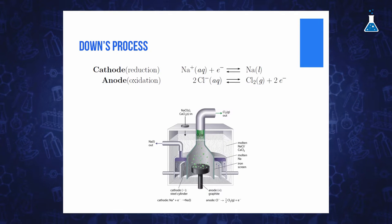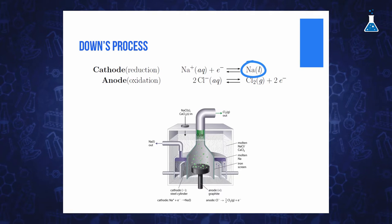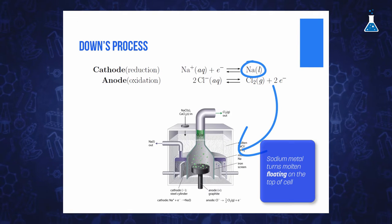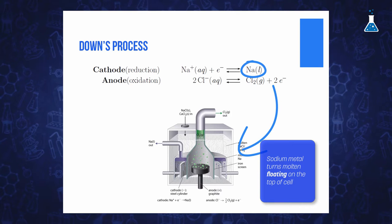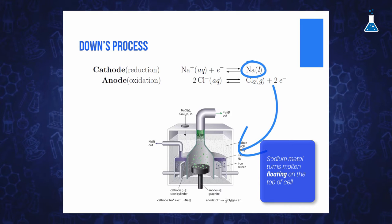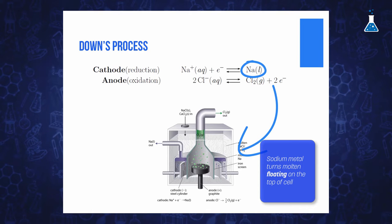Due to the high working temperature, the sodium metal forming at the cathode turns into molten sodium metal. The metal flows to the top of the cell since the liquid sodium is lighter than the electrolyte and can be easily drawn off.